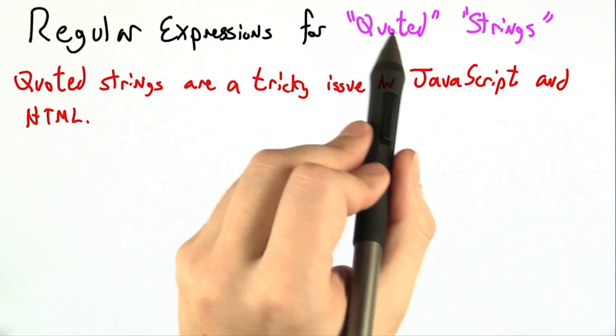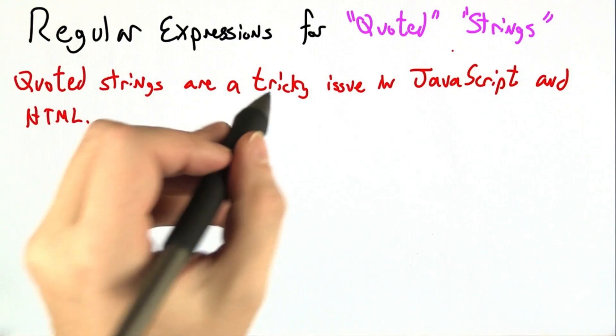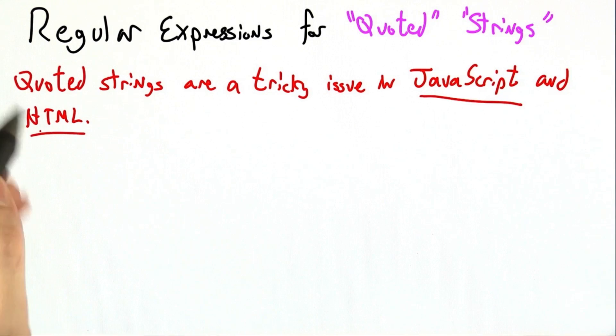Quoted strings, that is strings that are surrounded by double quotes or the like, are a tricky issue that comes up in both JavaScript and HTML.